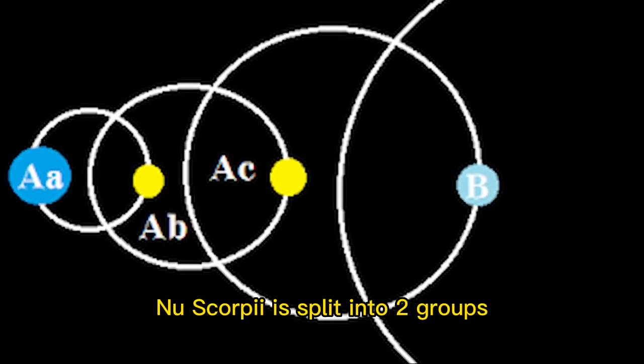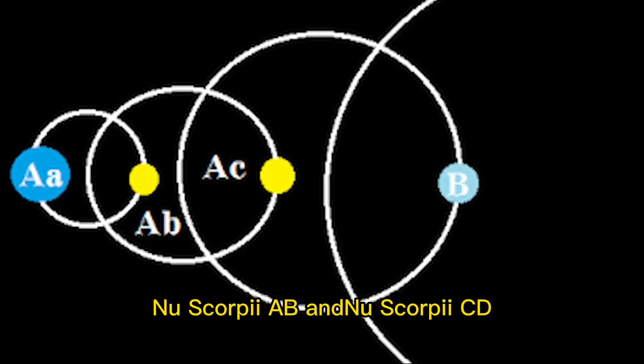Nu Scorpii is split into two groups: Nu Scorpii A-B and Nu Scorpii C-D.